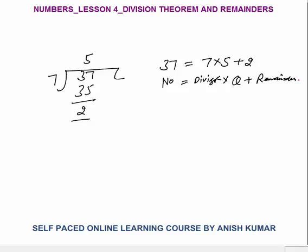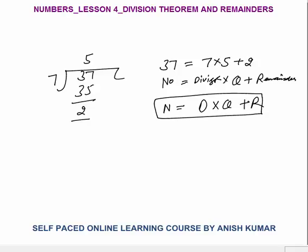Here 7 is the divisor, 5 is the quotient, and R is the remainder. In short form we can write N equals D into Q plus R. Number is always equal to divisor into quotient plus remainder.